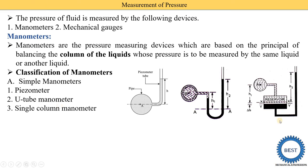The third type is the single column manometer, where one reservoir and a column are used. In a piezometer the same liquid is used throughout, whereas in a U-tube or single column manometer the measuring liquid is different — for example, mercury (shown in black) is used as the manometric liquid alongside the fluid whose pressure is being measured.